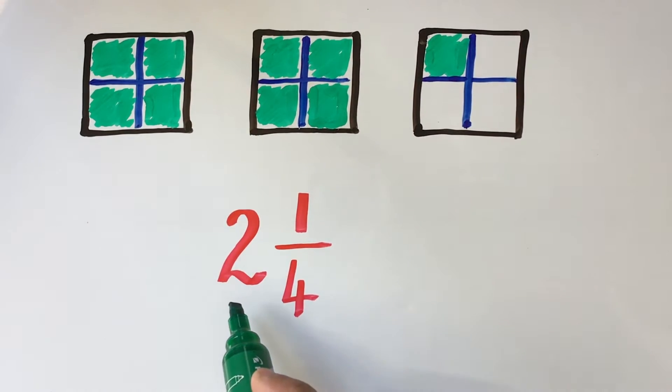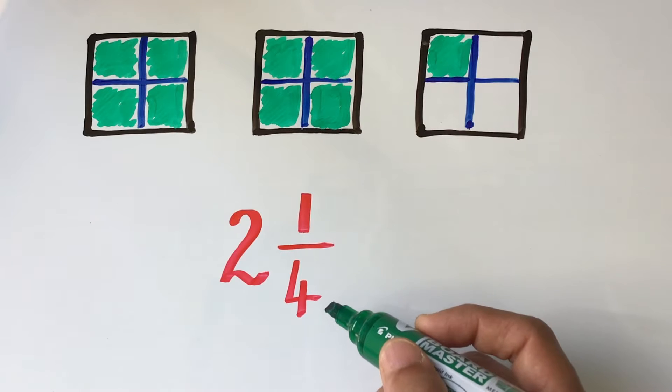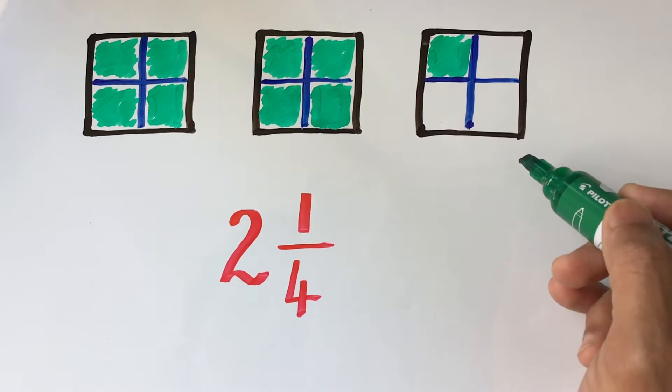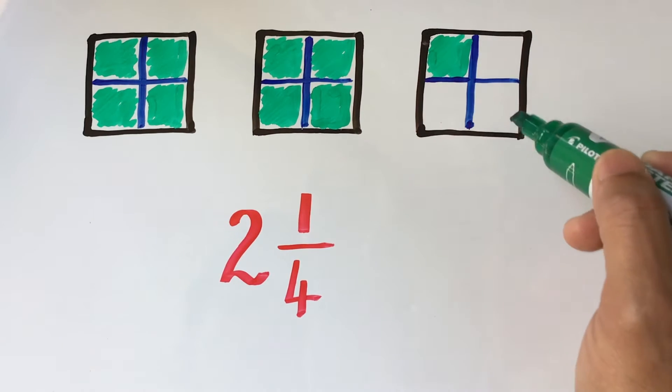As we see here, the whole number of the mixed fraction tells us how many wholes we have. The denominator or the bottom number of the fraction tells us how many equal parts one whole is divided into. As we can see here, each of the whole is divided into four equal parts.